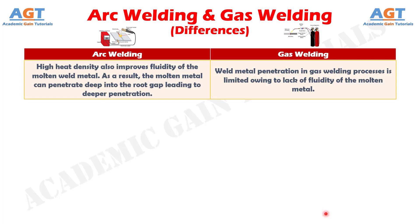Difference number 10. In arc welding, high heat density also improves fluidity of the molten weld metal. As a result, the molten metal can penetrate deep into the root gap, leading to deeper penetration, whereas weld metal penetration in gas welding is limited owing to lack of fluidity of the molten metal.